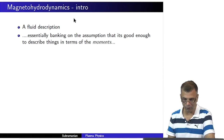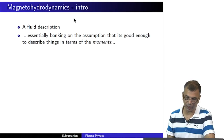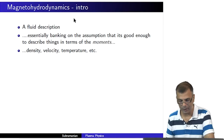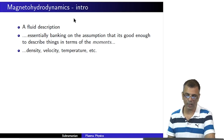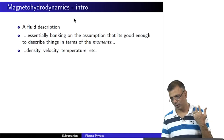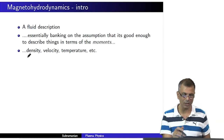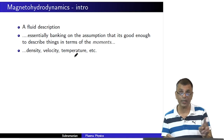All the usual approximations that we made to define fluids hold here too. It is a fluid description, which means we are essentially banking on the assumption that it is good enough to describe things in terms of moments like density, velocity, temperature, and so on. We were considering only the moments of the distribution function: density as the zeroth moment, velocity as the first moment, and temperature related to the second moment.